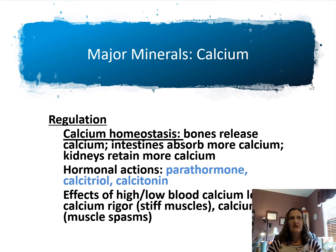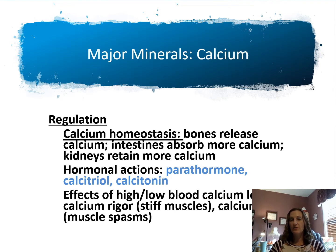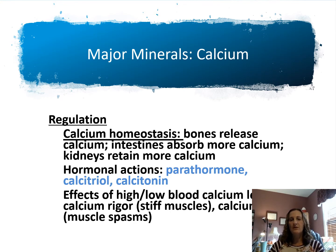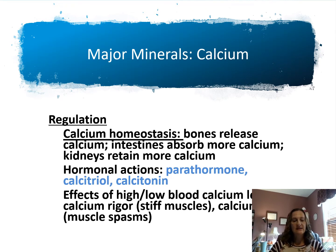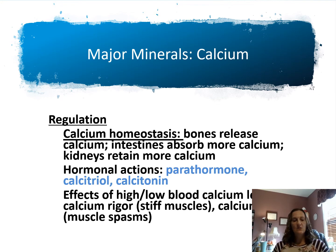Patients with a long-term history of low dietary calcium intake present more commonly in hospitals than we think. We must determine whether calcium levels are more affected in bone or blood. Symptoms include calcium rigor — stiff muscles with low blood calcium levels — or calcium tetany, which is muscle spasms.